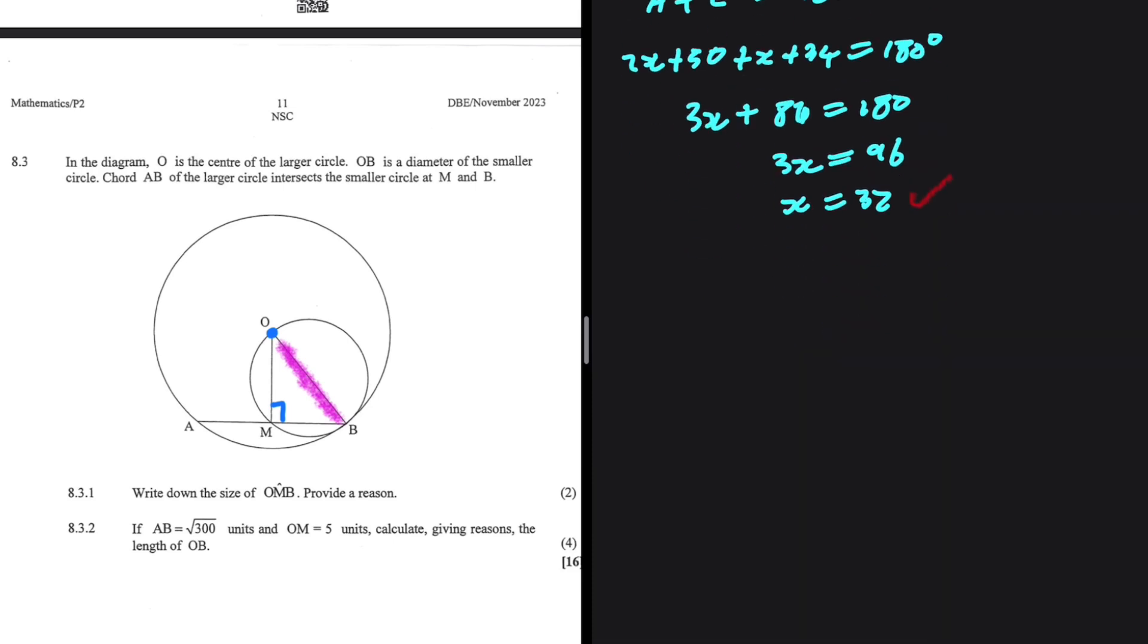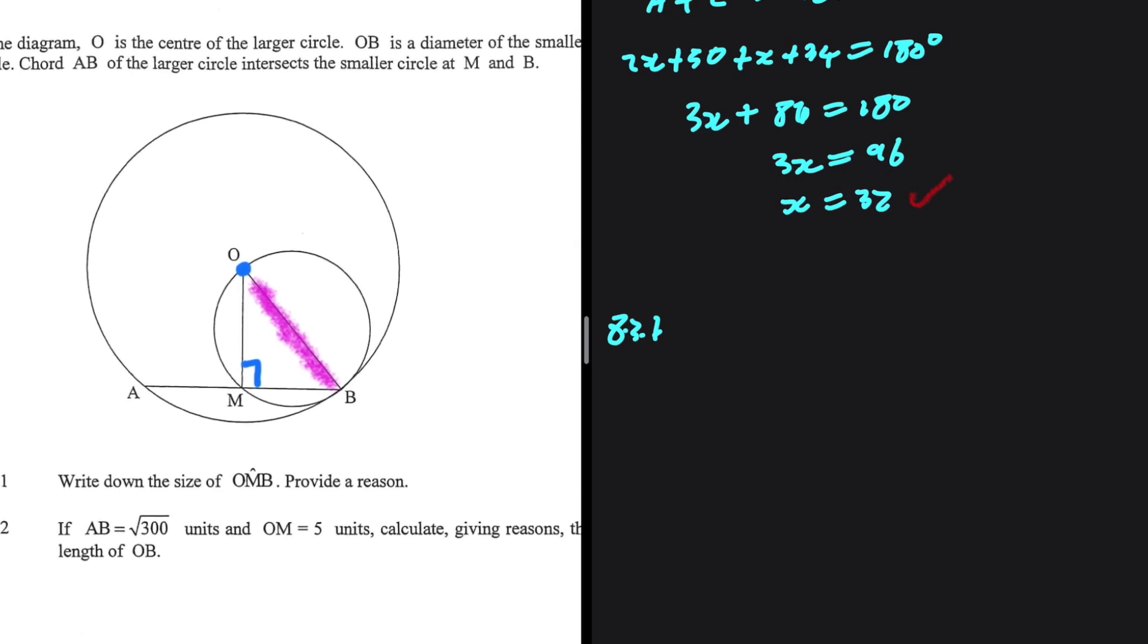Let's hear the story. We want to find 8.3.1: write down the size of angle OMB. Like I've said, angle OMB is equal to 90 degrees. That is because it is subtended by a diameter at the circumference of a circle, so it should be 90.